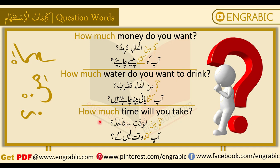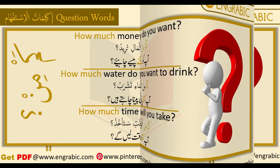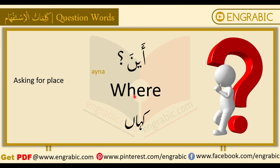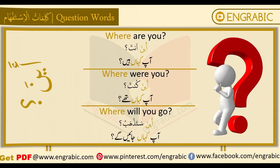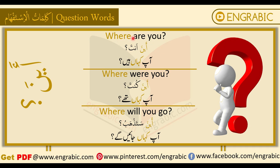Next is 'aina,' meaning 'where.' We use it when asking about a place or location. For example: 'Where are you?' — aina anta. 'Where were you?' — aina kunta — aap kahaan thay. 'Where will you go?' — aina satadhabu — aap kahaan jayenge.